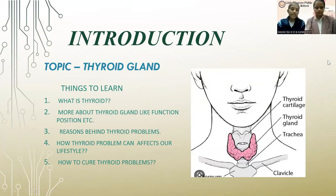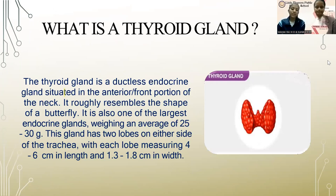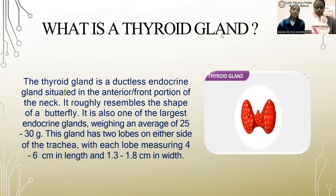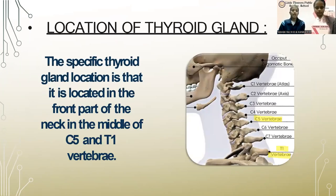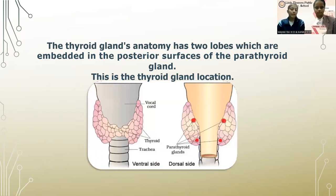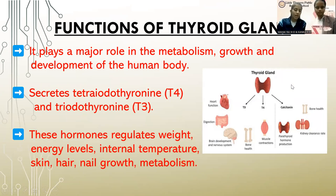The thyroid gland is a ductless endocrine gland situated in the anterior or front portion of our neck. It roughly resembles the shape of a butterfly. It is also one of the largest endocrine glands, weighing an average of 25 to 30 grams. This gland has two lobes on either side of the trachea, each lobe measuring 4 to 6 centimeters in length and 1.3 to 1.8 centimeters in width. It is located between the C5 and T1 vertebra. The thyroid gland's anatomy has two lobes embedded in the posterior surfaces of the parathyroid gland.